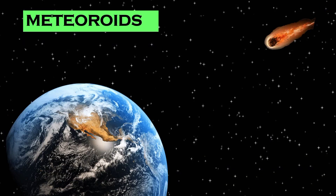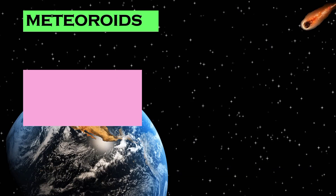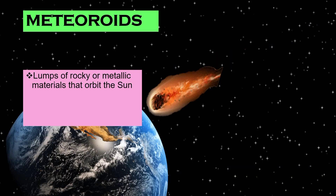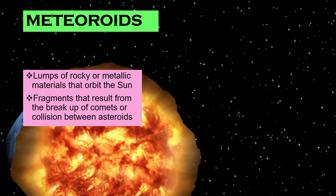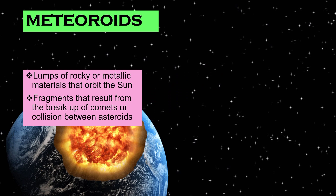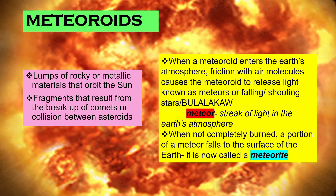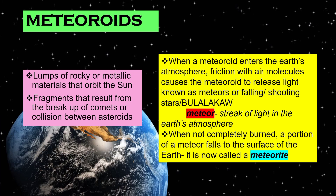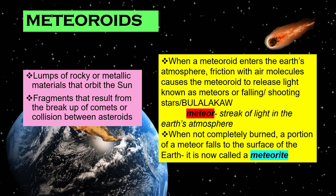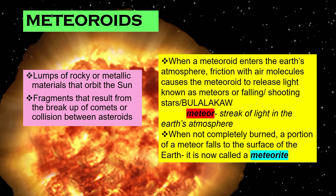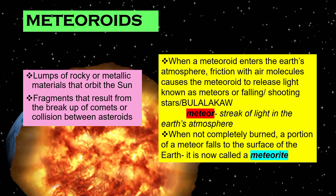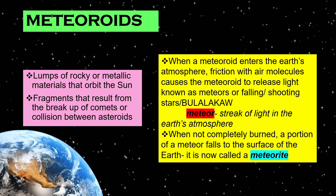Now let's have another type of space rock, which are meteoroids. Meteoroids are lumps of rocky or metallic materials that also orbit the Sun. They are actually fragments that result from the breakup of comets or collision between asteroids. When a meteoroid enters the Earth's atmosphere, there is friction between air molecules and that meteoroid. As a result, the meteoroid would release light, and that light phenomenon is now called a meteor. We better know them as falling stars or shooting stars, or in the Philippines, they are called bulalakaw. A meteor is actually a streak of light in the Earth's atmosphere.